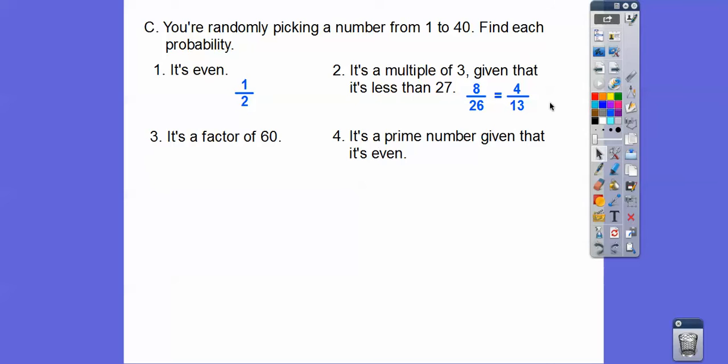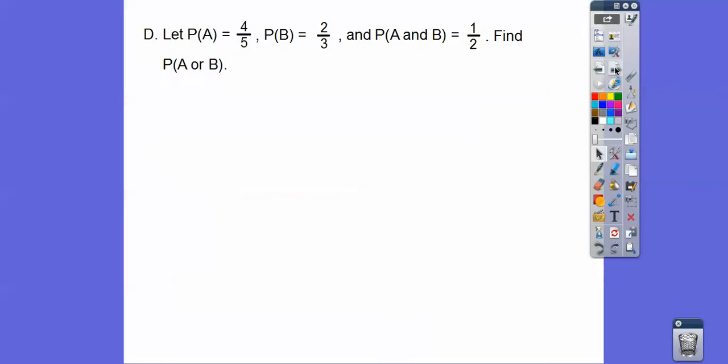It's a factor of 60. Here's all the factors of 60 less than 40 right there. There are 11 of them, so 11 out of the 40. It's a prime number, given that it's even. There's only 20 even numbers, so the bottom number is 20, and there's only one prime number that's even, the number 2, so it's 1/20.